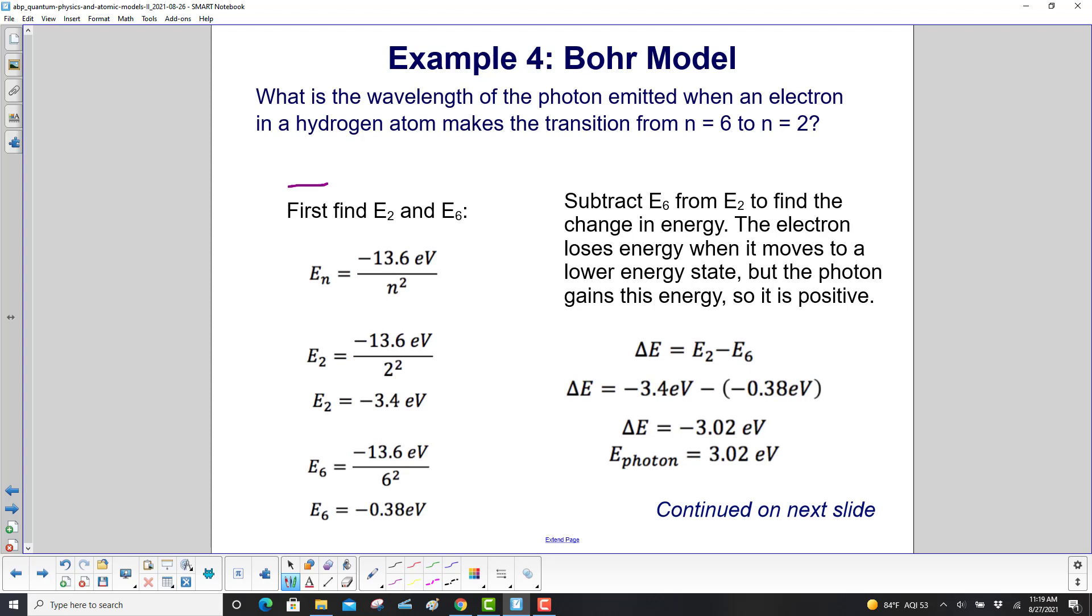First, we're going to find the energy levels in the second orbital and the sixth orbital. Then we'll subtract E₆ from E₂ to find the change in energy. The electron loses energy when it moves to a lower energy state, but where does that energy go? It goes into the photon. So the photon gains the energy, so it will be positive. So here's our general equation for the energy levels for hydrogen atom. Z equals one, so that falls out of the equation. Here's E₂, and here's E₆. So the change in energy is minus 3.4 eV minus minus 0.38 eV. So there's a change in energy there of negative 3.02 eV of the electron. But we want the photon's energy, so that's going to be opposite that. The photon will have an energy of 3.02 electron volts. Continued on the next slide.